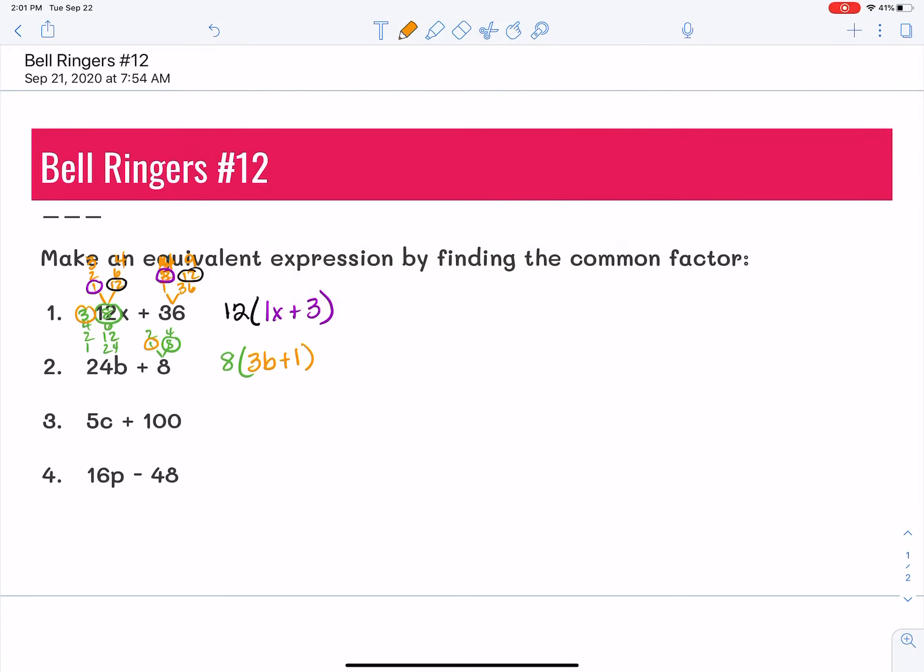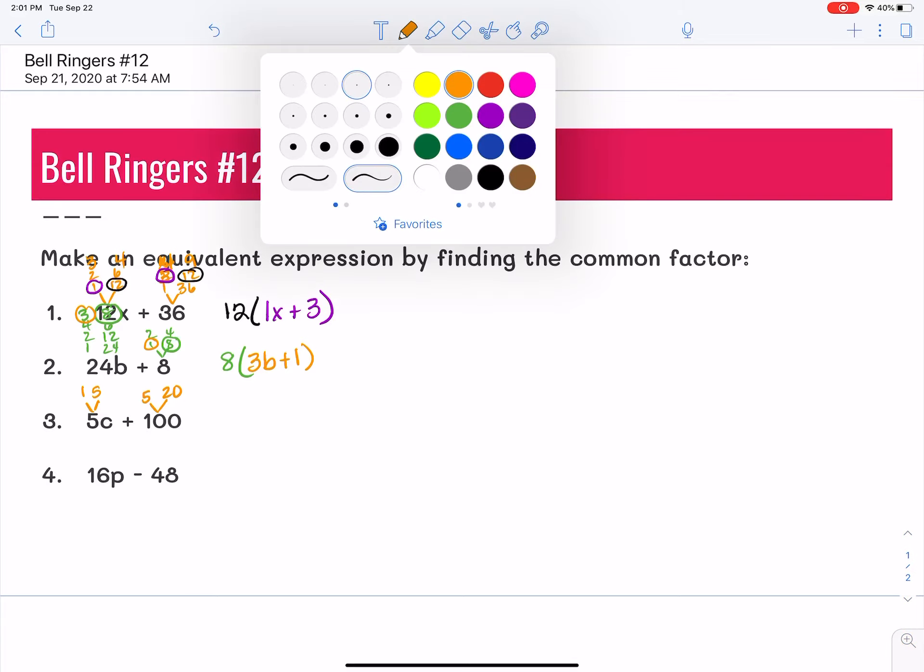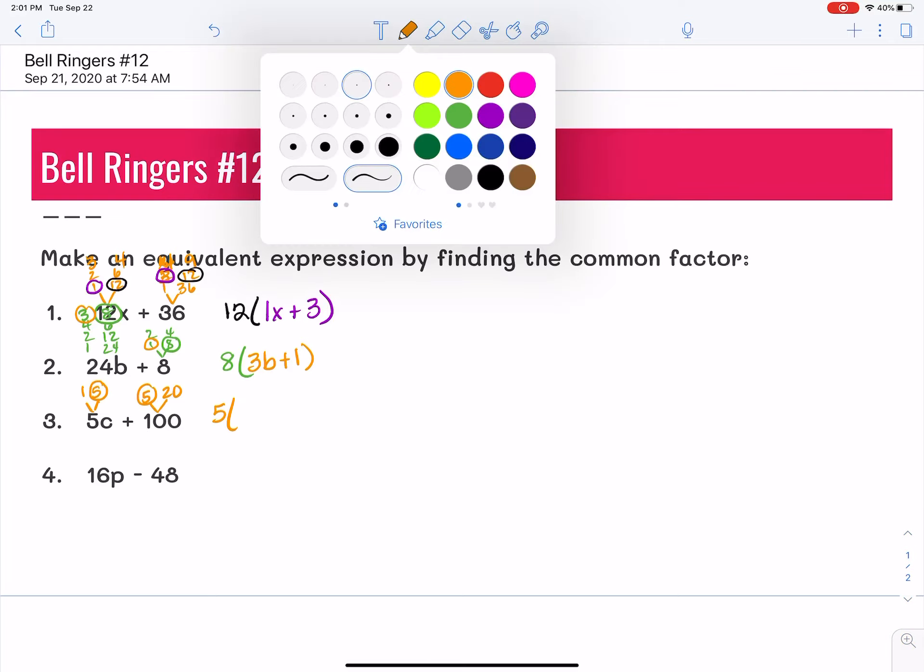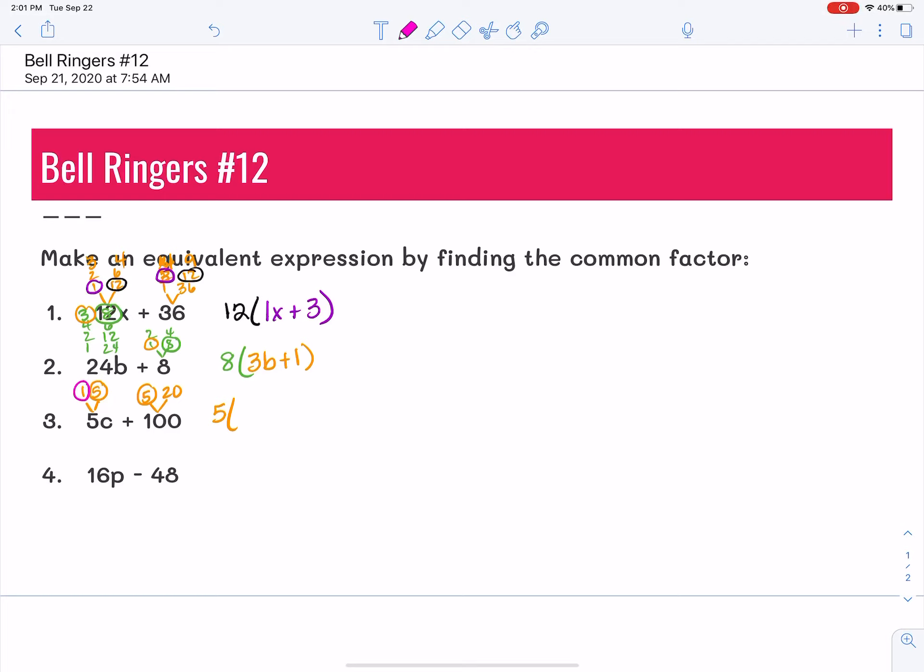The only factors here are 1 and 5, so I need to find something that has a factor of 5 and 100. That's 5 and 20. So the factor I'm going to pull out will be 5. Five times the factors that are left, which is 1c and positive 20.